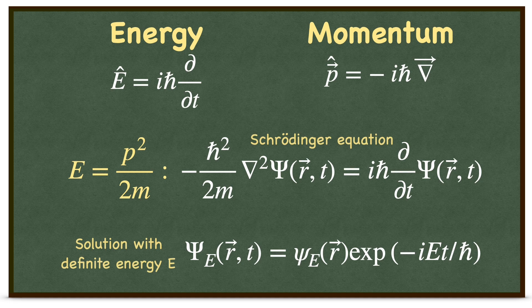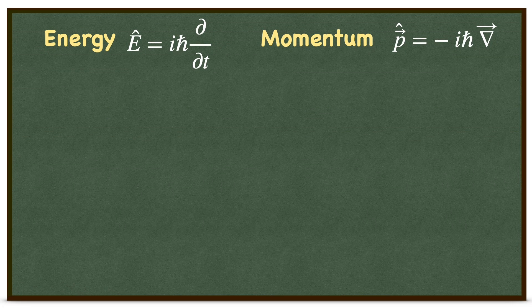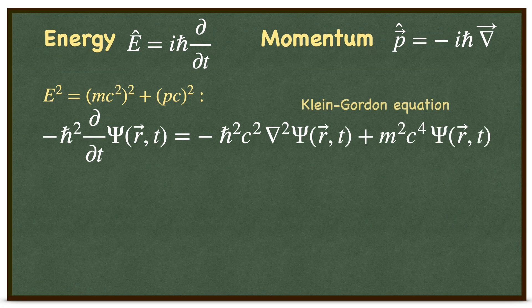However, for particles near the speed of light, the energy-momentum relationship is different. The solutions to this Klein-Gordon equation can be either positive or negative.